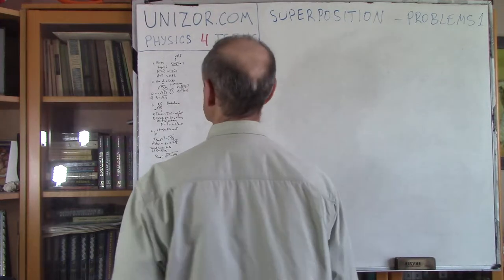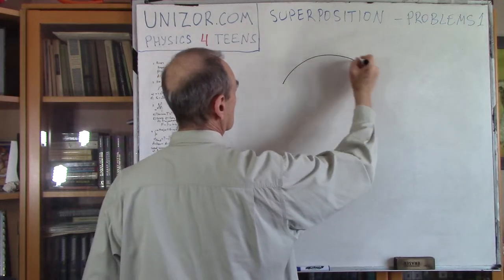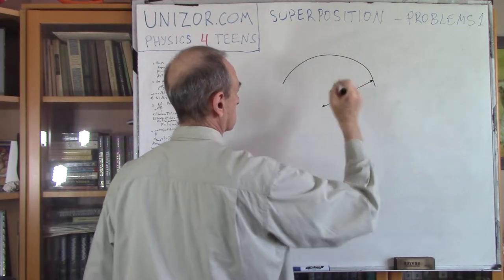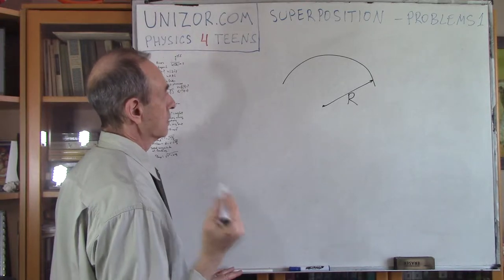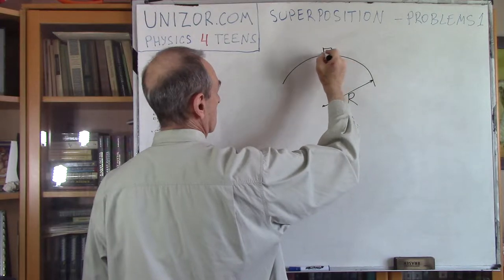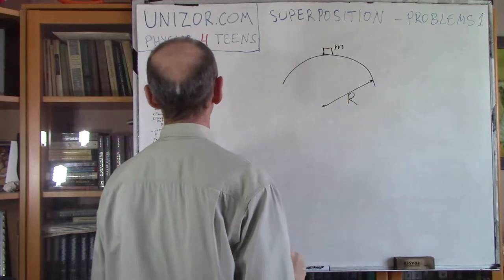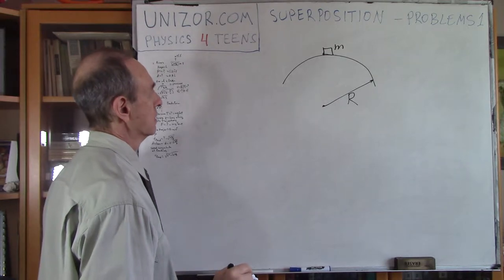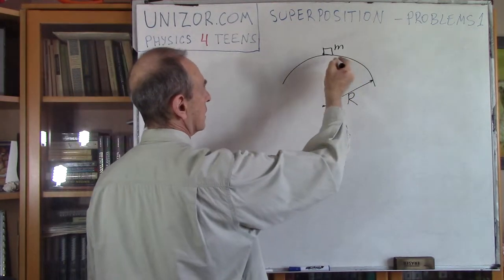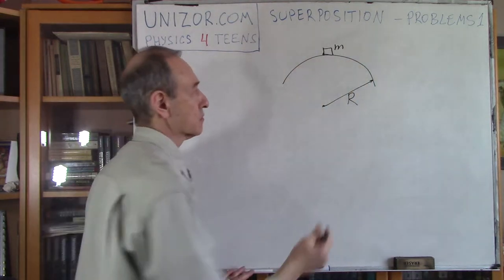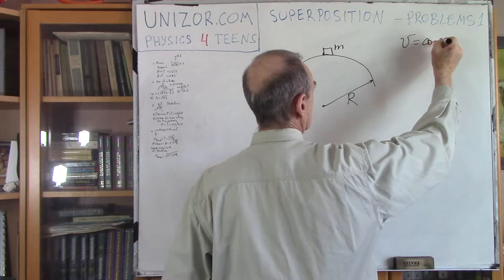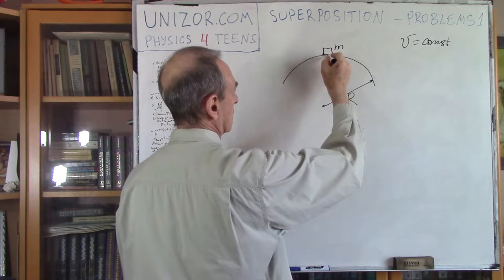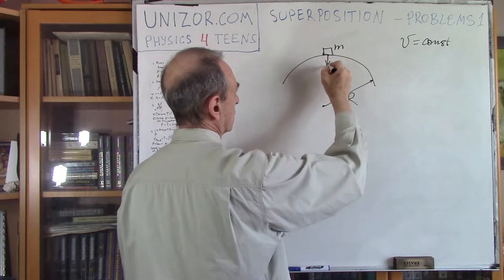Next problem. You have a bridge in the form of an arc of known radius R. There is a car of mass M on top of the bridge. I need to know how the speed of the car — assuming constant speed V — depends on the pressure at that particular point onto the bridge.